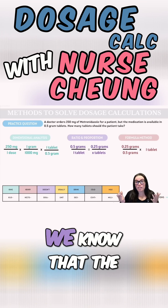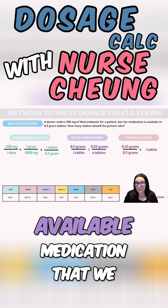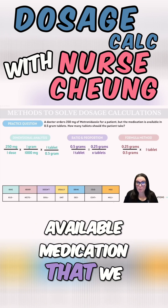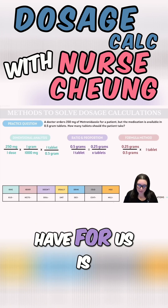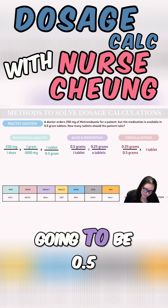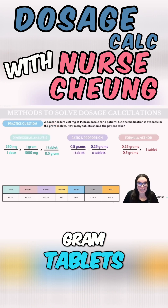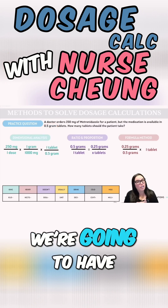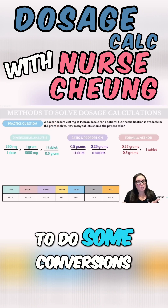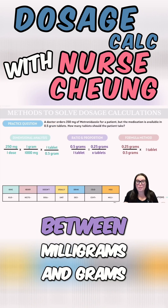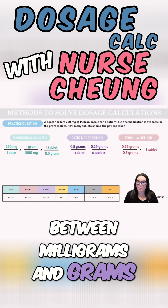Next up, we know that the available medication we have is going to be 0.5 gram tablets, so we're going to have to do some conversions between milligrams and grams.